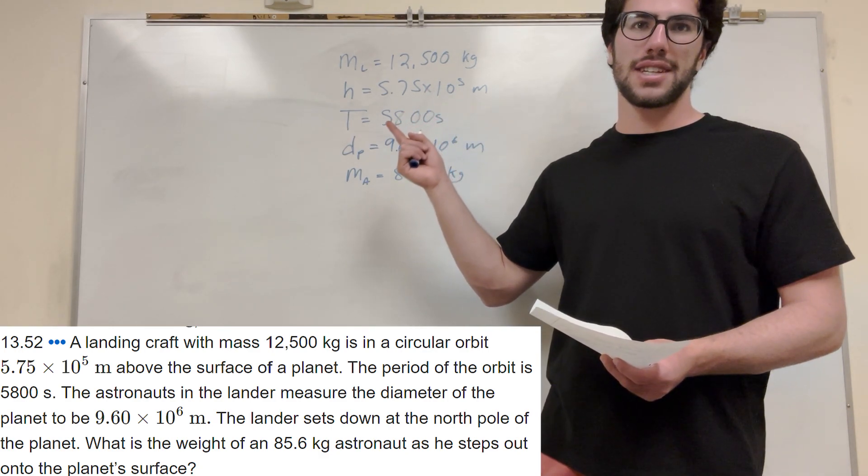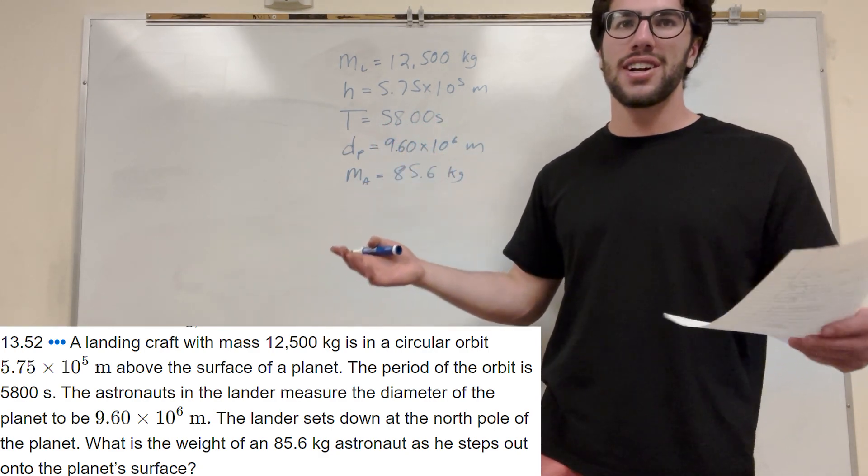What's up Calc gang? Alright, so we got this pretty complicated problem here. We have a landing craft that's in orbit, and it gives us these constant numbers basically and the period of orbit. The astronauts in the lander measure the diameter of the planet, and the lander sets off at the north pole of the planet. It wants to know what is the mass of the astronaut.